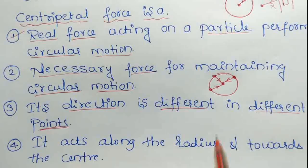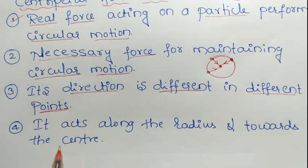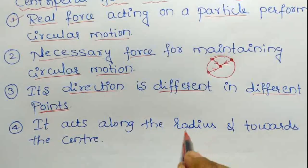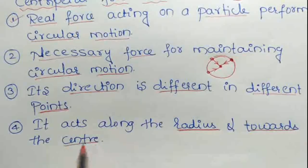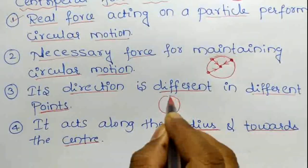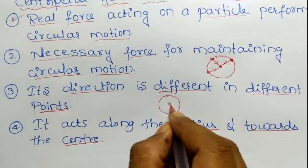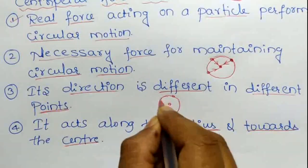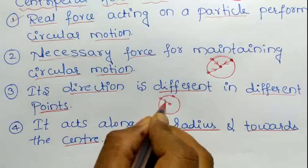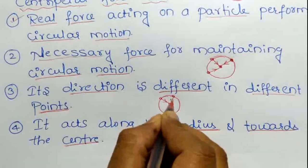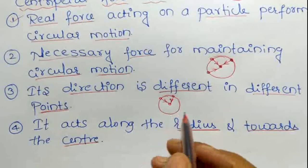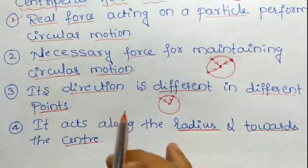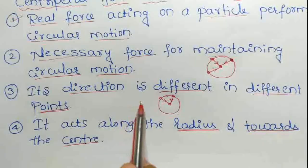Fourth characteristic: centripetal force acts along the radius and towards the center at every point of the circular path.